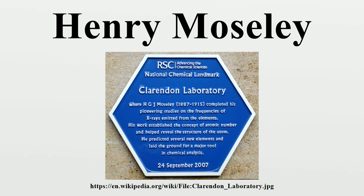In addition, Moseley predicted two more undiscovered elements, those with the atomic numbers 72 and 75, and gave very strong evidence that there were no other gaps in the periodic table between the elements aluminium and gold. This latter question about the possibility of more undiscovered elements had been a standing problem among the chemists of the world, particularly given the existence of the large family of the lanthanide series of rare earth elements. Moseley was able to demonstrate that these lanthanide elements, from lanthanum through lutetium, must have exactly 15 members, no more and no less. The number of elements in the lanthanides had been a question very far from being settled by the chemists of the early 20th century.